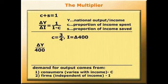Well, the change in Y over the change in I, which is assumed now to be 400, is equal to 1 over 1 minus, and we're assuming that little c, remember, is 3 quarters.